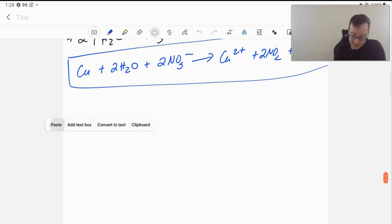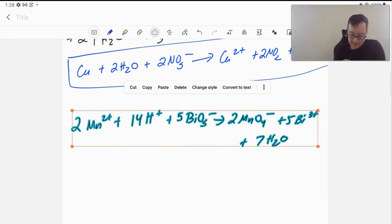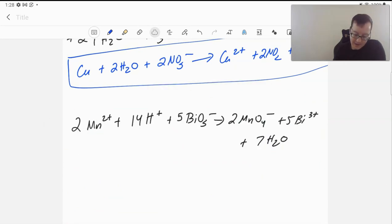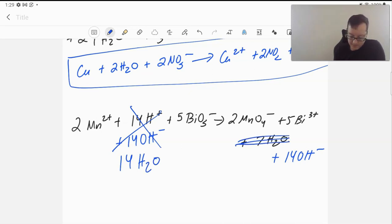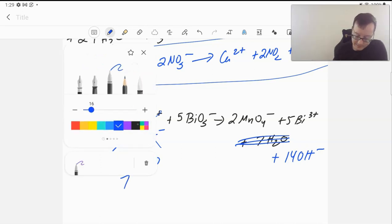So we're going to add 14 OH- to both sides. Remember that this together will make 14 waters. Since we have seven waters here, we're going to remove seven waters there, and that's all we need to do. Everything else stays the same.